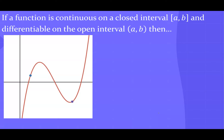Suppose you have a function that is continuous on a closed interval [a, b] and differentiable on the open interval (a, b). Looking at the graph, if that is a, we go across — this is f(a), here is b, and f(b) is the y-value at b. This function is continuous because we can draw from a to b without lifting our pencil, and differentiable because you can visualize the slope of the tangent line throughout the curve between a and b.